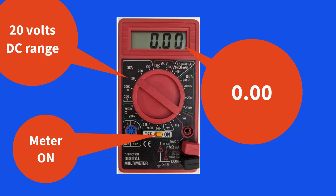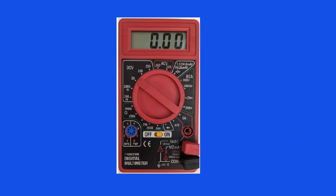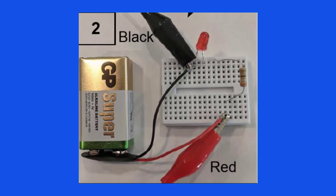The first measurement we're going to make is the voltage across the battery. Notice that I use the word across. This is different from measuring current.